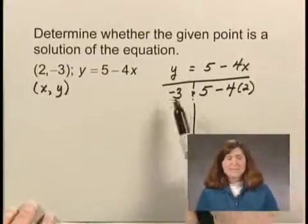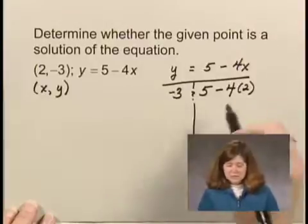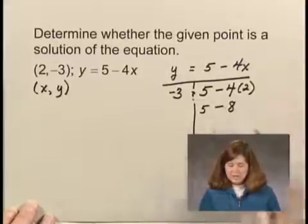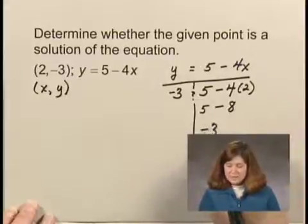And I want to know if this side, negative 3, is equal to this side. Well, simplifying over here, I have 5 minus 4 times 2 is 8, and 5 minus 8 is negative 3.